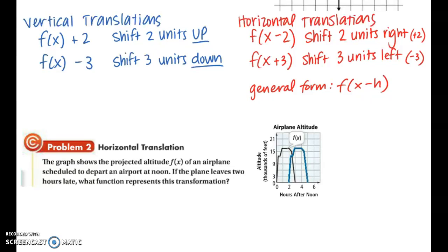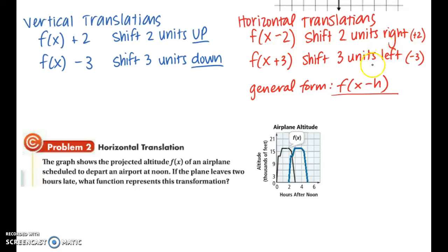Vertical translations are easier to understand because the number is always outside the inputs — a positive number outside means going up, a negative number outside means going down. The trickier part is horizontal translations because they look like the opposite of what we'd expect. The general form is f(x minus h), where the minus sign is part of the formula. So shifting 2 units to the right gives f(x minus 2), because you're inputting positive 2 with the minus sign already there. Shifting 3 units to the left gives f(x plus 3), because the double negative becomes a positive.